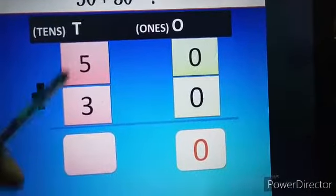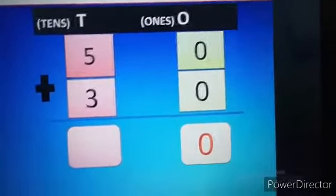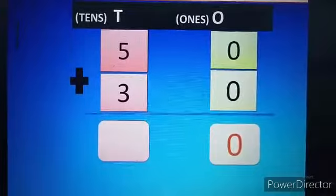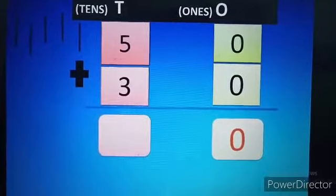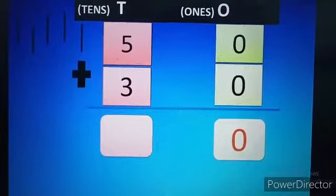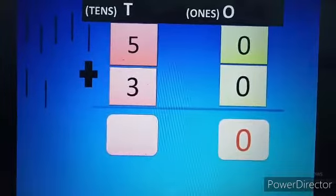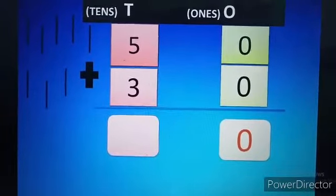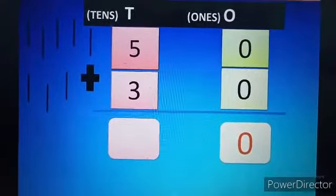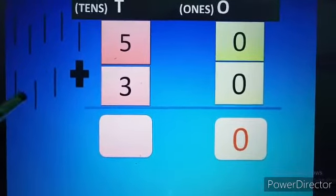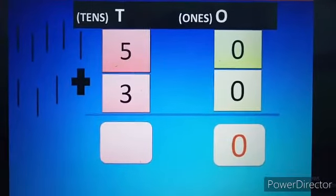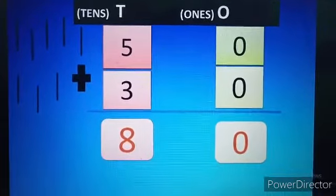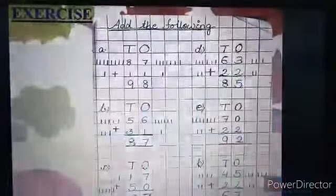And now come to tens place. Here what digits are there? 5 plus 3. So how many lines we will draw first? 5 lines. 1, 2, 3, 4 and 5. And after that 3 digit is there. Now draw 3 lines. 1, 2 and 3. Now what we have to do? Plus symbol is there means we have to calculate all together. Now calculate. 1, 2, 3, 4, 5, 6, 7 and 8. So how many number you got? 8. So your answer is 8. Let's move toward the exercise part.